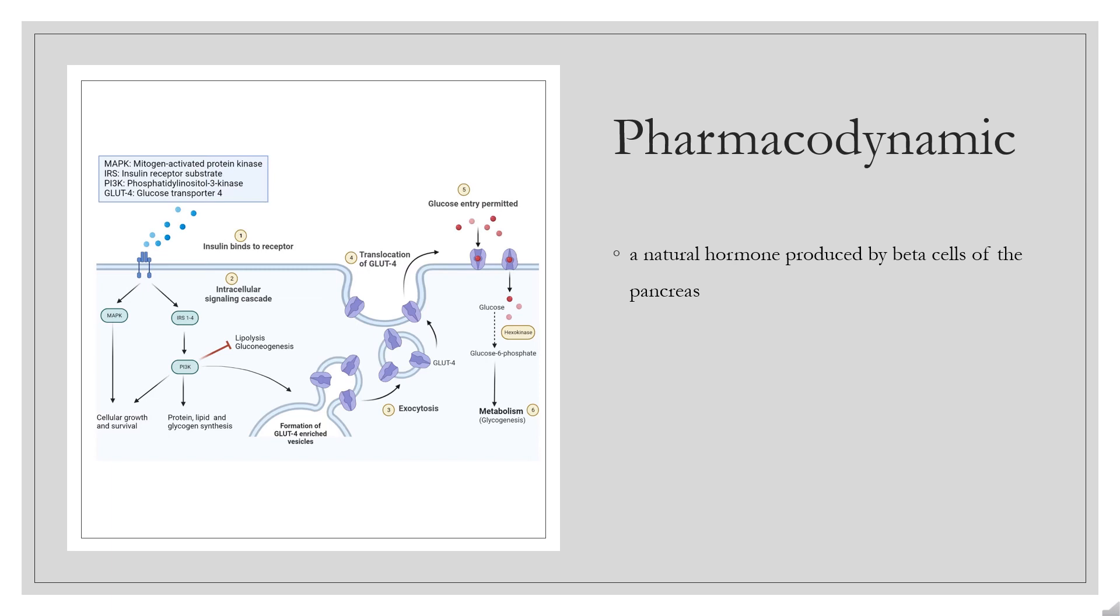Postprandial insulin spikes are responsible for the metabolic changes that occur as the body transits from a postabsorptive to absorptive state. Insulin promotes cellular uptake of glucose, particularly in muscle and adipose tissues, promotes energy storage by glycogenesis, and opposes catabolism of energy stores.